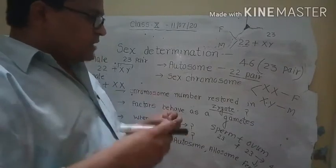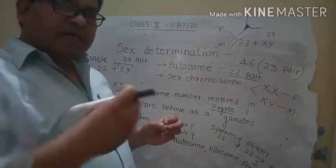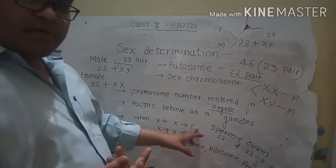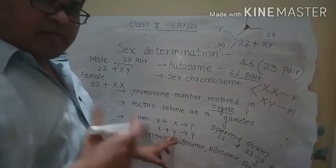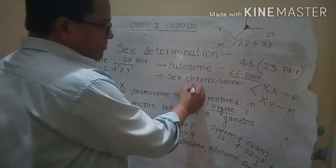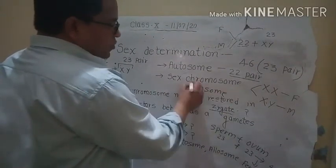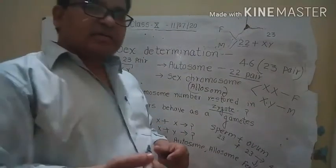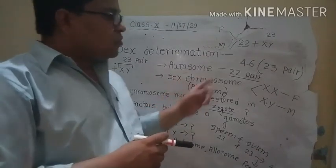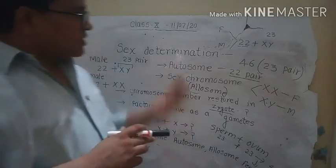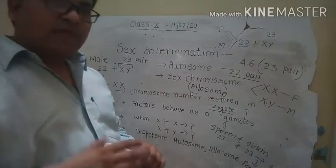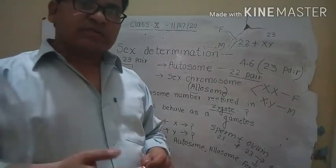The X and Y chromosomes act in gamete formation. When X fuses with X, that will give rise to female, and when X fuses with Y, that will give rise to the male body. This is the difference between autosomes and allosomes — sex chromosomes. This is all about sex chromosomes regarding the topic of sex determination. If you have any confusion, you can discuss with me. Thank you.